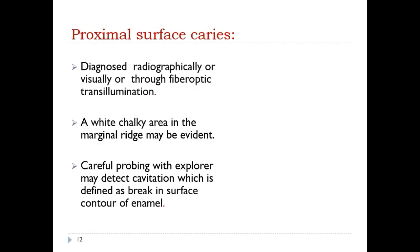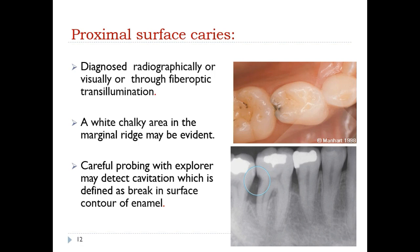Proximal surface caries can be diagnosed radiographically by bitewing radiographs or visually through fiber optic transillumination. A white chalky area in the marginal ridge may be evident, and in the radiograph there is radiolucency in the CEJ region. Careful probing with an explorer may detect cavitation, defined as breaking the surface or contour of enamel.